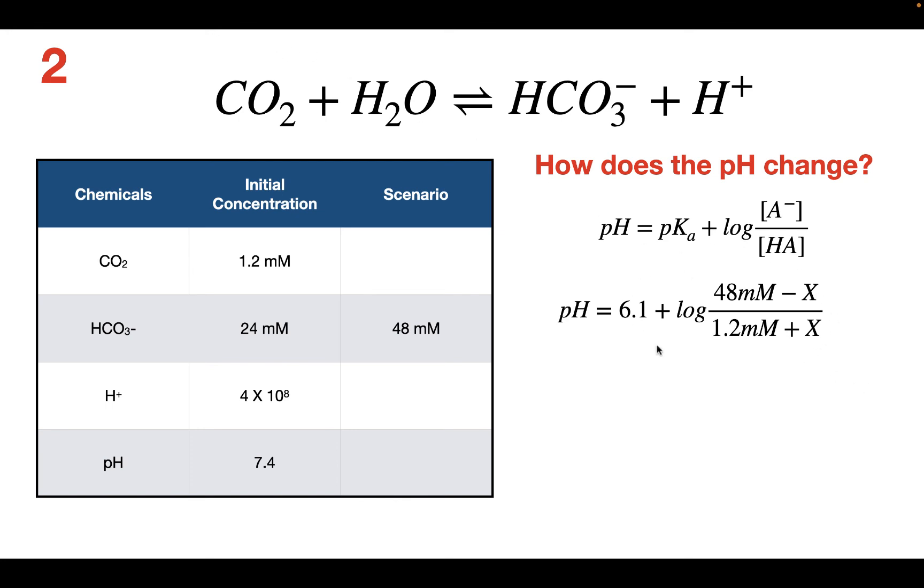But we're going to assume that the X produced and the X taken away from the bicarbonate is going to be very small. The amount of X that is taken away from the bicarbonate is very small, and the amount of CO2 that is produced is also very small because it's an open system. Therefore, we can simplify it to this equation here, giving us a pH of 7.7.